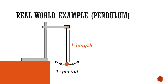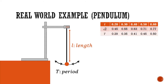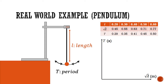After repeating the experiment by changing the variable l, we will have a set of observed results t. We will also need to add an additional row of square root of l in the table. Then we can construct the axis t against square root of l, plot the points, and draw a best fit line, shown here in green.